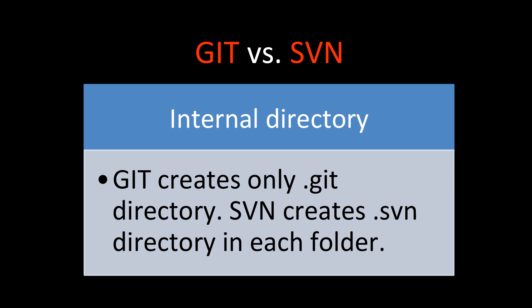Regarding internal directory structure: Git creates only a single .git directory within the repository. SVN, on the other hand, creates a .svn directory inside each folder — whatever folders you have in your code, each one will contain a .svn directory.